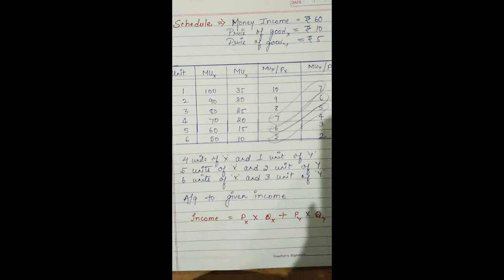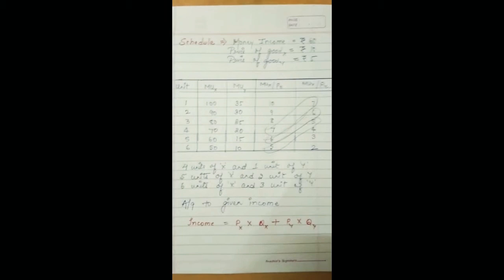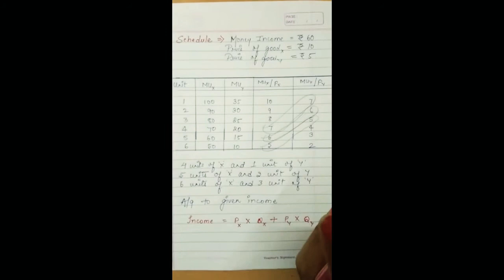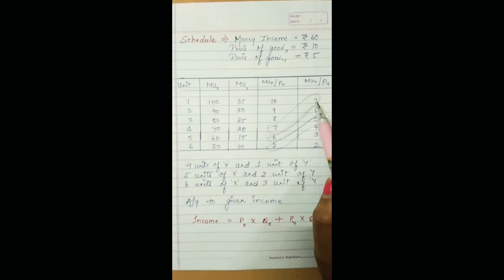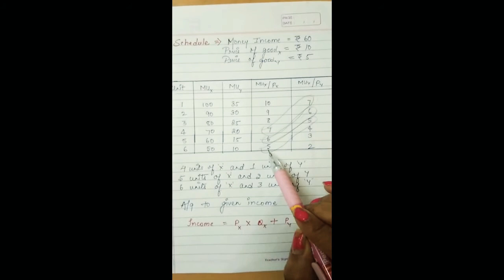Now let's find out the equilibrium. We know MUx / Px = MUy / Py = MUm. Looking at MUx / Px: at the first unit it is 10, but MUy / Py is not 10 anywhere — no equilibrium. At 9 — again no. At 8 — again no. But at the fourth unit of X, MUx / Px = 7, and at the first unit of Y, MUy / Py = 7. Then at the fifth unit of X it is 6, and the second unit of Y it is 6. At the sixth unit of X it is 5, and the third unit of Y it is 5. So we have three possible equilibrium points.